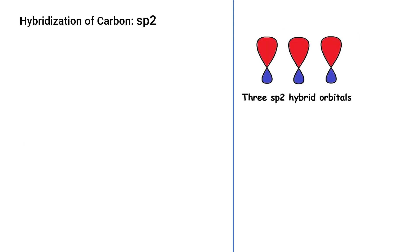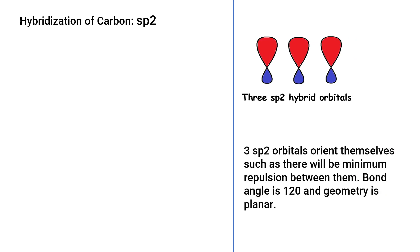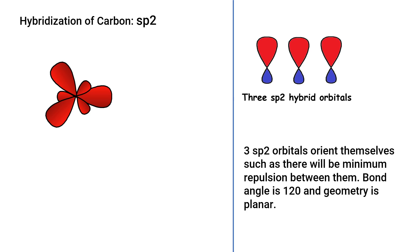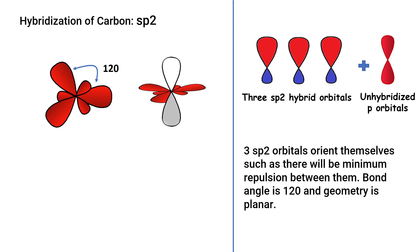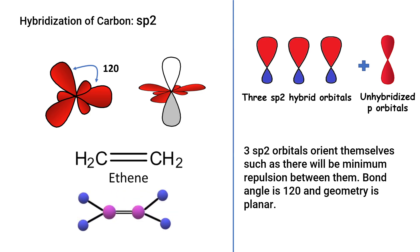These three sp2 hybrid orbitals orient themselves in space with a bond angle of 120 degrees. There is one unhybridized p orbital which remains perpendicular to the plane of the sp2 orbitals, and there is one unpaired electron in each of these orbitals. The example is ethylene — the carbon atoms in ethylene are sp2 hybridized and the geometry is planar.